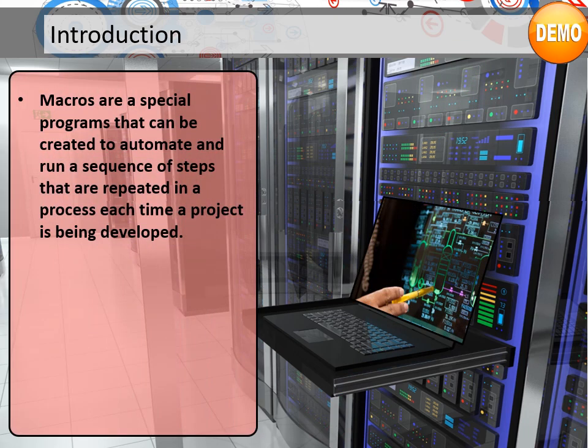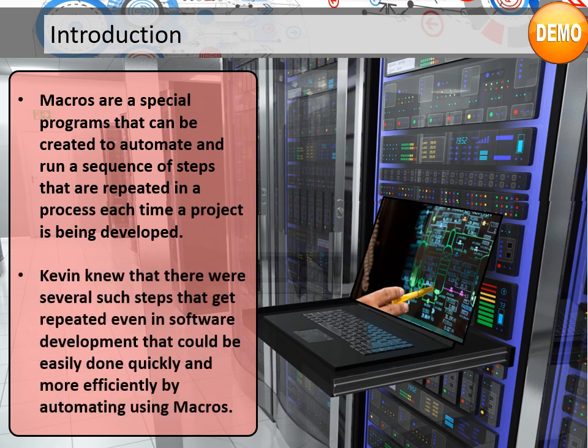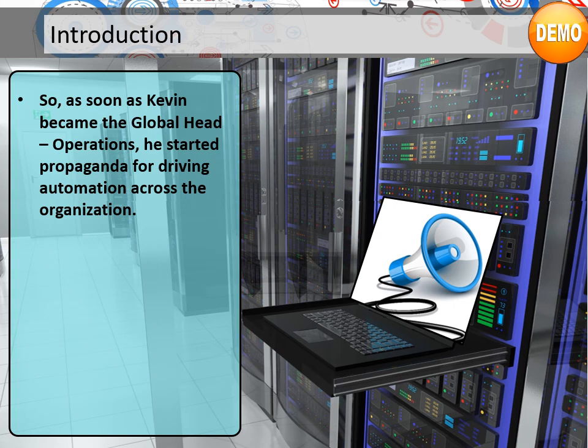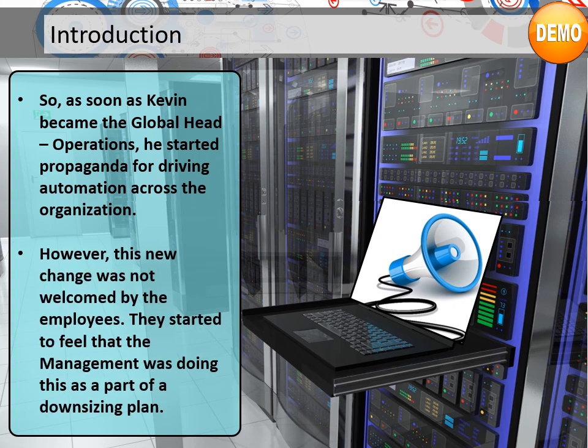Macros are a special program that can be used to automate and run a sequence of steps that are repeated in a process each time a project is being developed. Kevin knew that several such steps that get repeated even in software development could be done quickly and more efficiently by automating using macros. So, as soon as Kevin became the Global Head of Operations, he started a campaign for driving automation across the organization. However, this new change was not welcomed by the employees, who started to feel that management was doing this as part of downsizing.